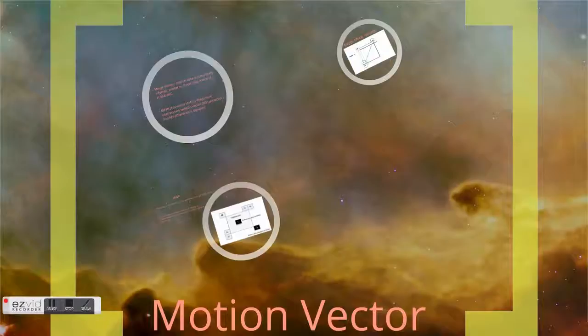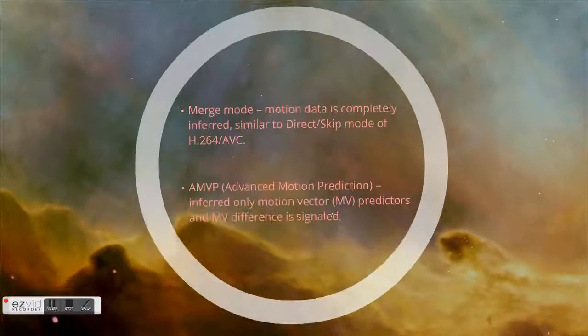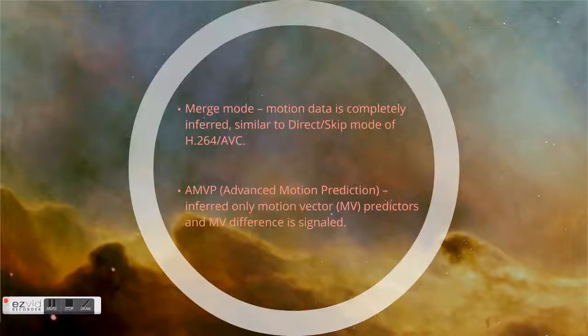Now, motion vector and motion vector compensation, which introduces a few different modes. It's Merge mode first and MVP mode. Merge mode is very similar to Direct and Skip mode in H.264. And MVP mode is very similar to motion vector and motion vector difference.